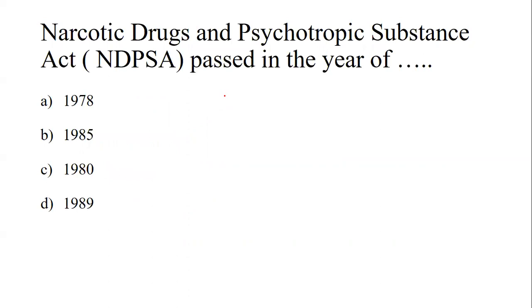Our next question: the Narcotic Drugs and Psychotropic Substances Act — that is NDPS Act — was passed in the year? The options are 1978, 1985, 1980, and 1989.